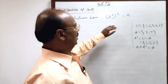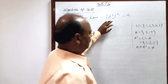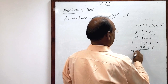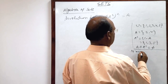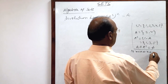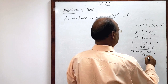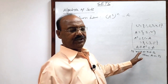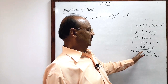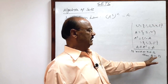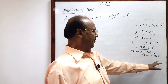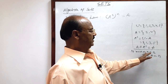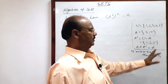Now let us prove it. We will use a property of set theory: if any element x belonging to set A implies that x belongs to another set B, it means set A is a subset of set B, because by definition of subset, A is a subset of B if all elements of A are also in set B. So if x is an arbitrary element of set A and x also belongs to B, then A is a subset of B.